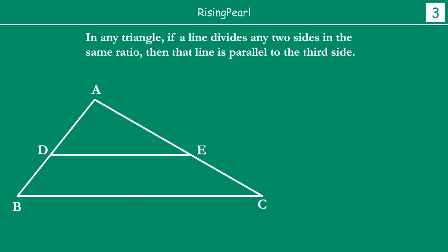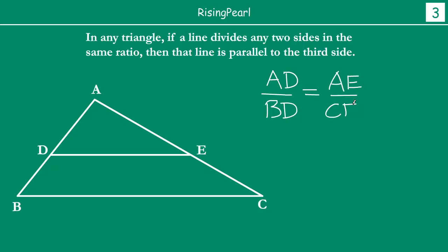We start with triangle ABC and line DE. What is given to us is that AD divided by BD is equal to AE divided by CE. Let's call this our first equation. Now, for a moment, think that this line DE is not parallel to BC. We are trying to prove that this line is indeed parallel to BC, so we hypothetically assume it is not.